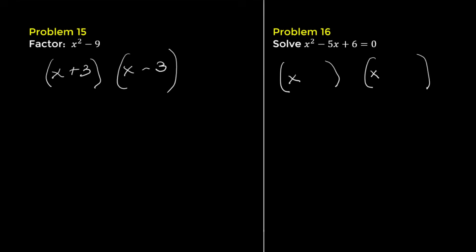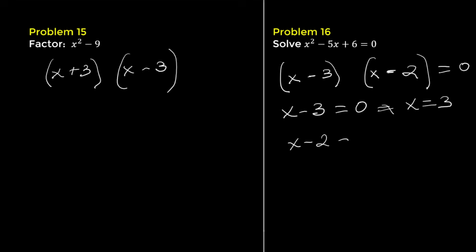Problem 16. Solve x squared minus 5x plus 6 equals 0. We need two numbers that multiply to positive 6 and add to negative 5. The numbers are negative 3 and negative 2. Therefore, x minus 3 times x minus 2 equals 0. Using the zero product property, x minus 3 equals 0 so x equals 3, and x minus 2 equals 0 so x equals 2.